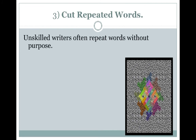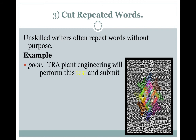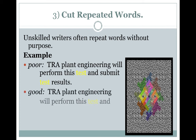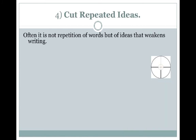We can also cut repeated words. The first rule was referring to separate sentences; this refers to repeated words within the same sentence. You can see here 'test' and 'test' repeated, and there is absolutely no need for it. In the revision: 'Plant engineering will perform this test and submit results' — the second 'test' isn't even needed. Cut repeated words.